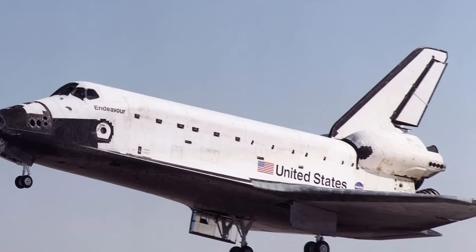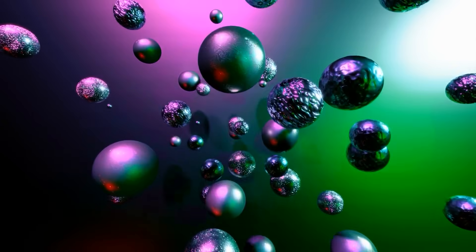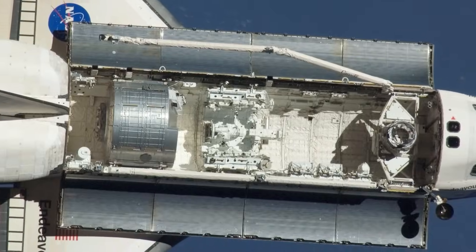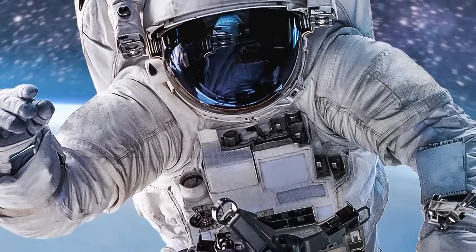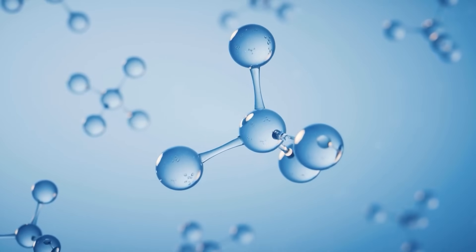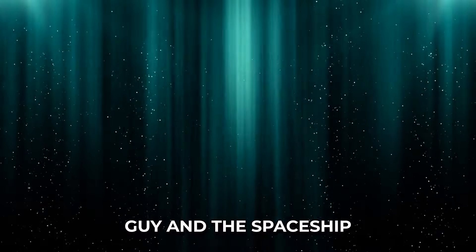Now picture this from the spaceship's perspective. The photon is still doing its bounce dance. But because of the spaceship's speed, the guy in the cafe seems to be moving in an extended angle. To the astronauts, the photon's journey looks longer. Yet the speed of light remains the same for both the guy and the spaceship.